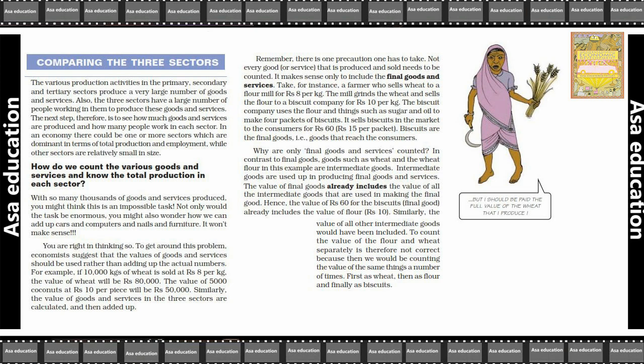Isi tarah se, 5,000 coconuts ki value jo hai Rs. 10 per piece ke hisaab se, Rs. 50,000 hogi. Similarly, the value of goods and services in the three sectors are calculated and then added up.